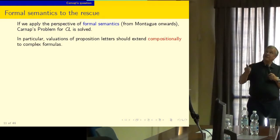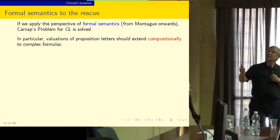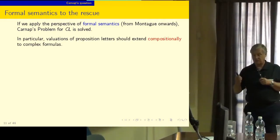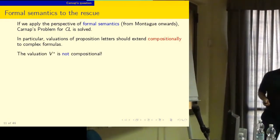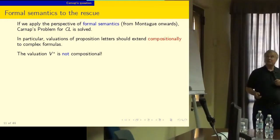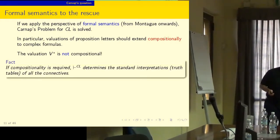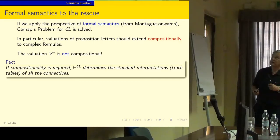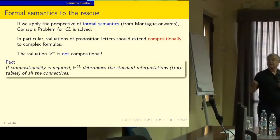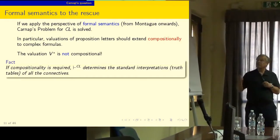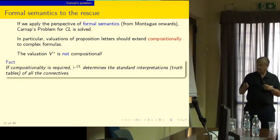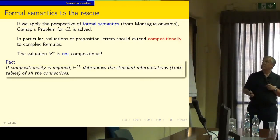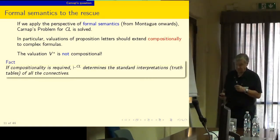I want to say that as soon as you apply the perspective of formal semantics — namely compositional meaning assignment — the problem disappears or is solved. If you require of valuations that they should extend a valuation of propositional letters, true and false, compositionally to all formulas, then V-star is not compositional. And you can see that if compositionality is required, then classical consequence — in fact already intuitionistic consequence — determines the standard truth tables.